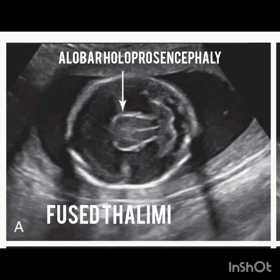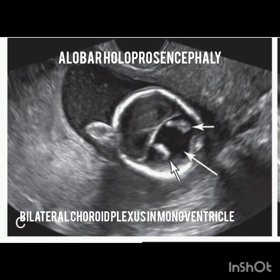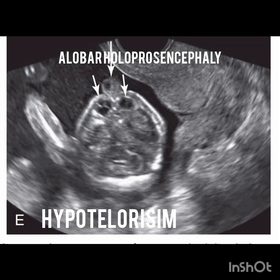This is the image of a fetus at 20 weeks gestation. You can see that the thalami are fused, indicated by the arrow. In this image you can see a monoventricle indicated by the M, and a rim of thin brain tissue. Another image shows a monoventricle with bilateral choroid plexus indicated by the two short arrows. This is a midline sagittal view of a proboscis indicated by the arrow — an appendage protruding from the forehead. You can also see both a proboscis and hypotelorism, which is decreased intraorbital space.